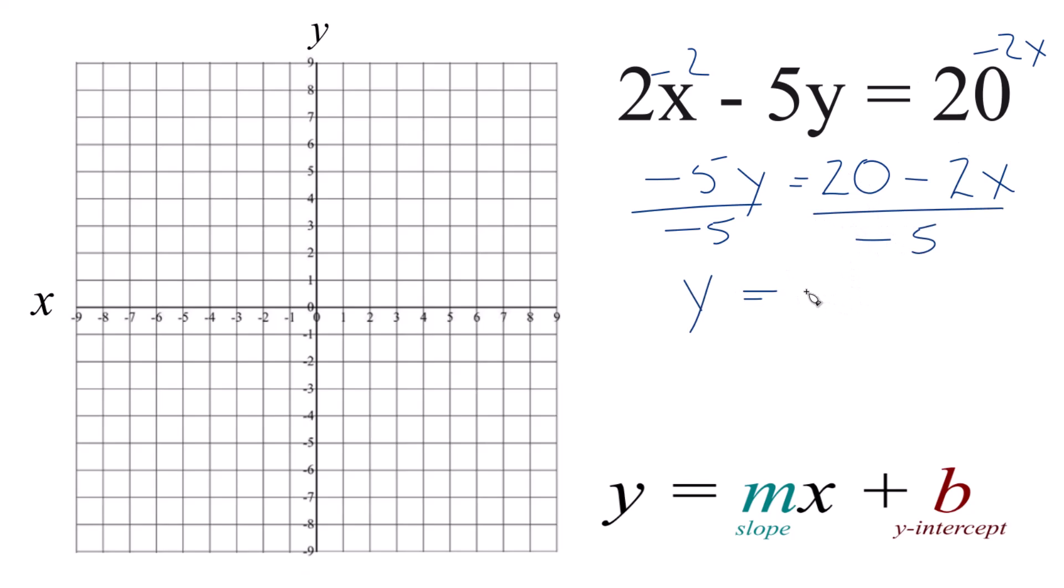20 divided by negative 5, that's negative 4. And negative 2 divided by negative 5, that's a positive 2 fifths x there.